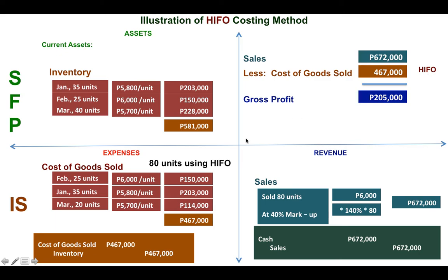Take note that what we are concerned with here is the cost per unit. As far as the physical items are concerned — the 35, 25, and 40 units — they can all be in one place. It is possible that the company is just putting everything together, and it doesn't matter whether those 80 units sold came from March, February, or January physically. In these costing methods, what matters is the cost assigned to your cost of goods sold, not the physical identification of the units.